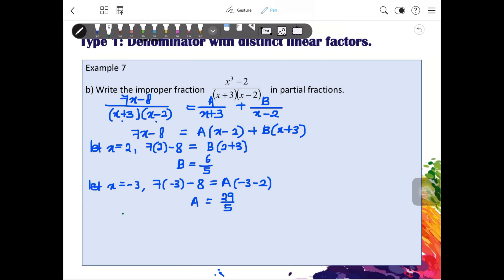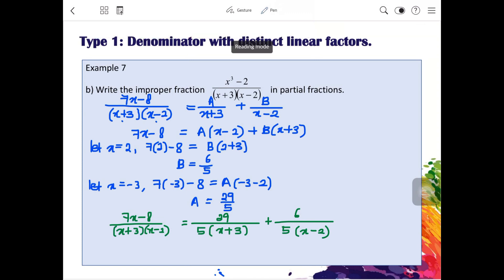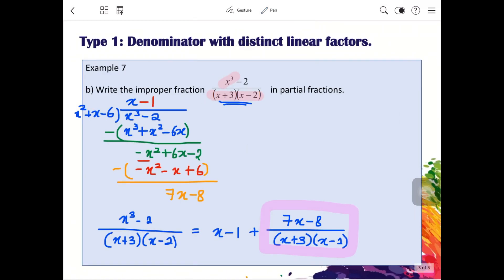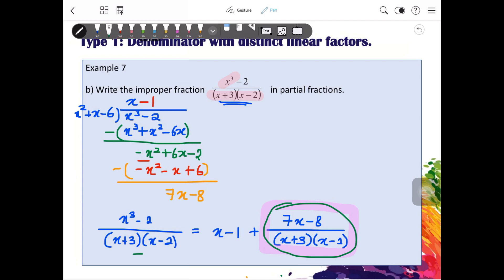So the answer for this partial fraction is 7x minus 8 over x plus 3, x minus 2 is 29 over 5, x plus 3 plus 6 over 5, x minus 2. However, this is not our final answer because this is just the small part of here. So we will combine them together.